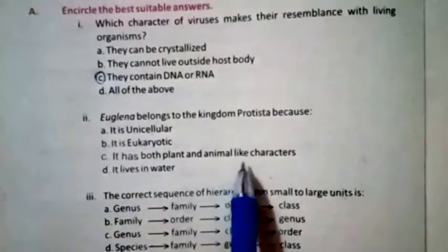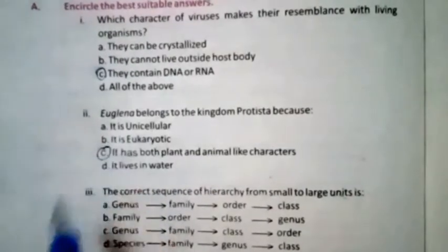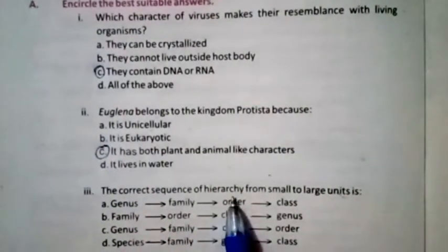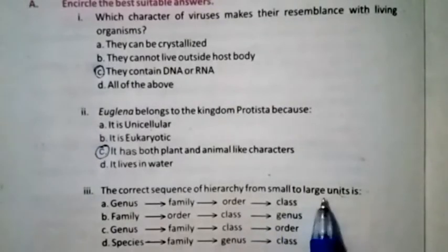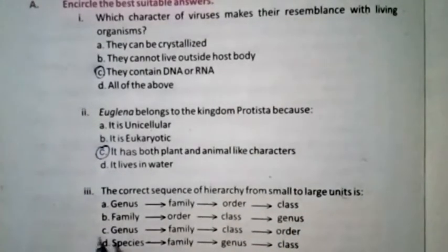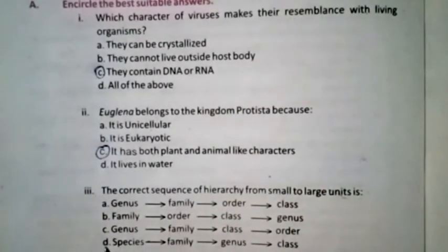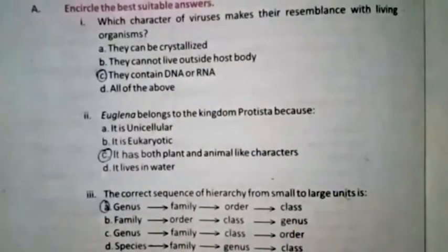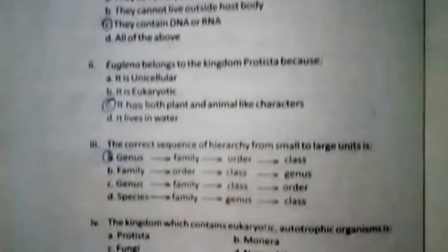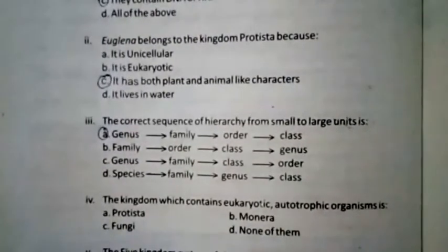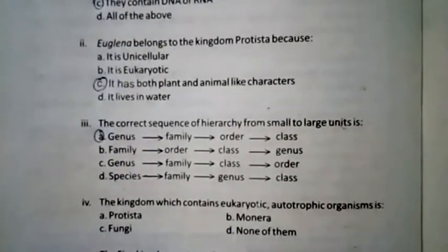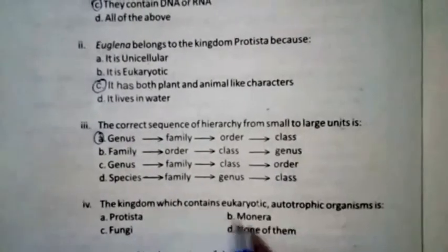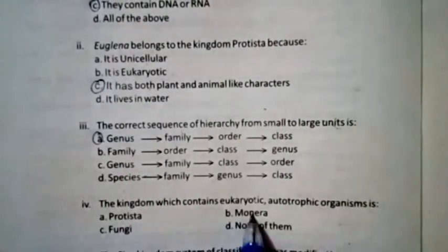Question three: The correct sequence of hierarchy from smaller to larger unit is A — genus, then family, order, and then class. Question four: The kingdom which contains eukaryotic autotrophic organisms — the right option is Plantae, as none of Protista, Monera, or Fungi are solely autotrophic eukaryotes.